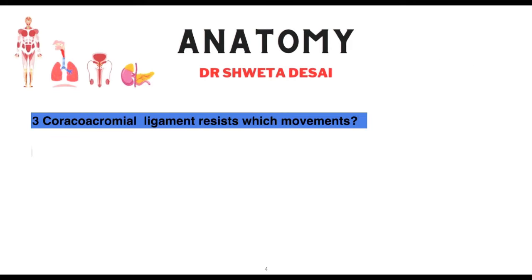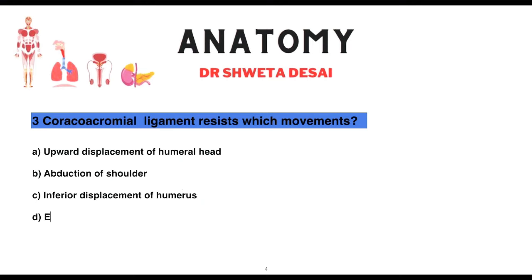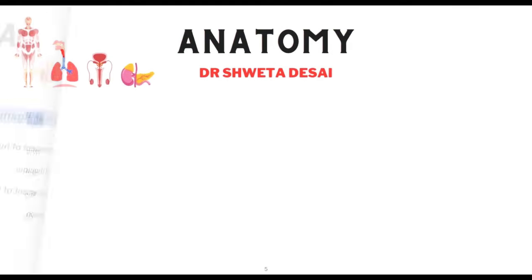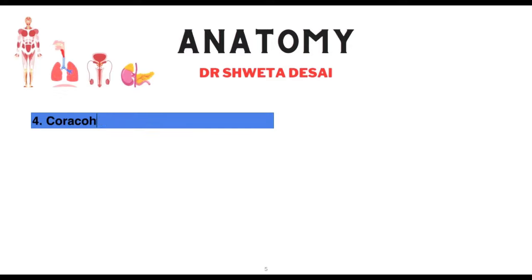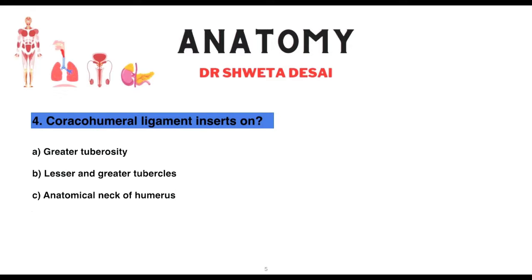The coracoacromial ligament resists which movement: upward displacement of the humeral head, abduction of the shoulder, inferior displacement of the humerus, or external rotation? It resists the upward displacement of the humeral head. The coracohumeral ligament inserts on the lesser and greater tubercles.